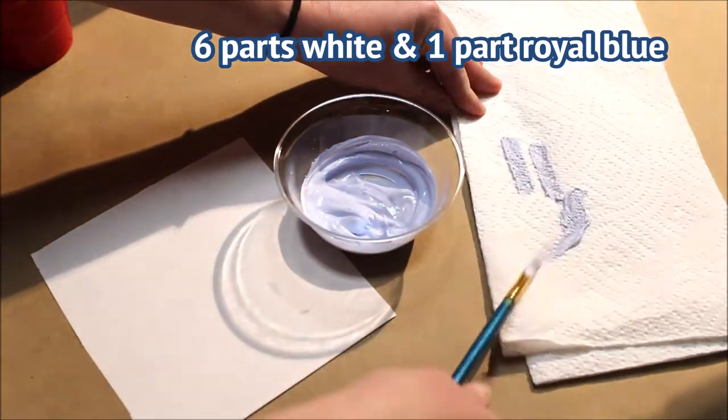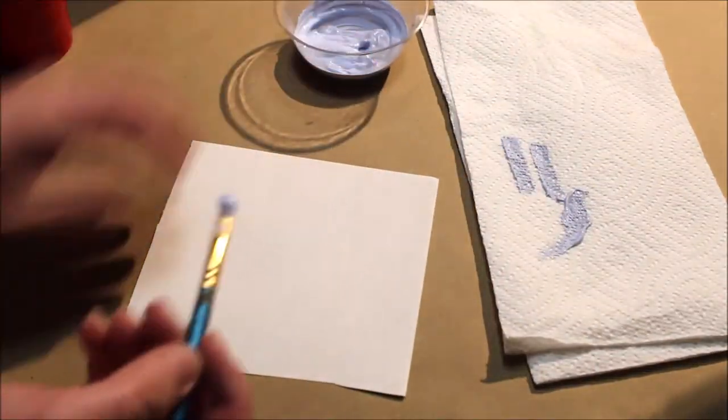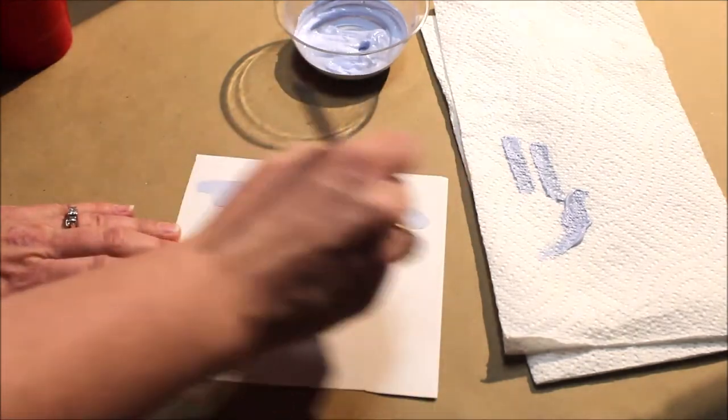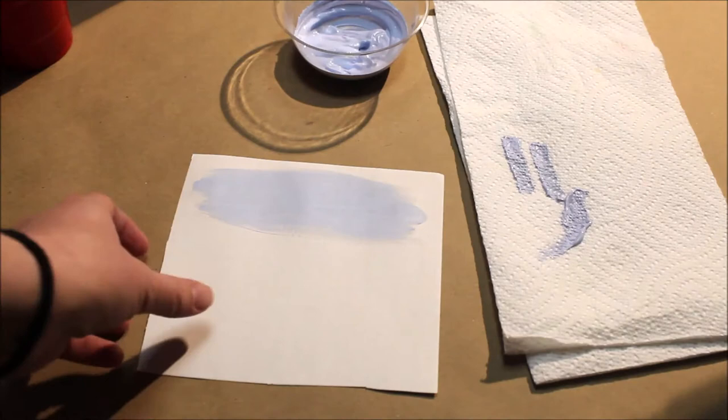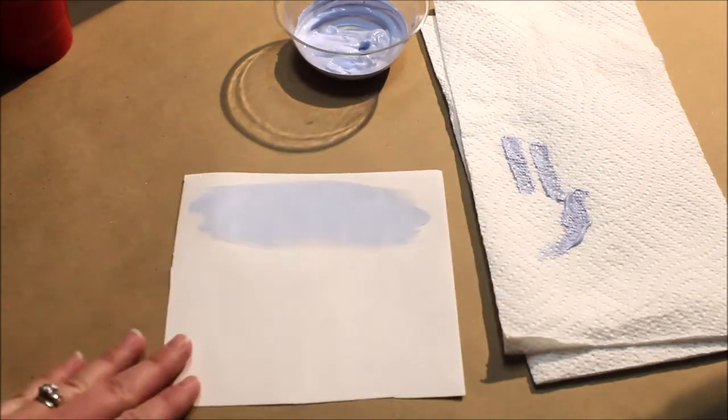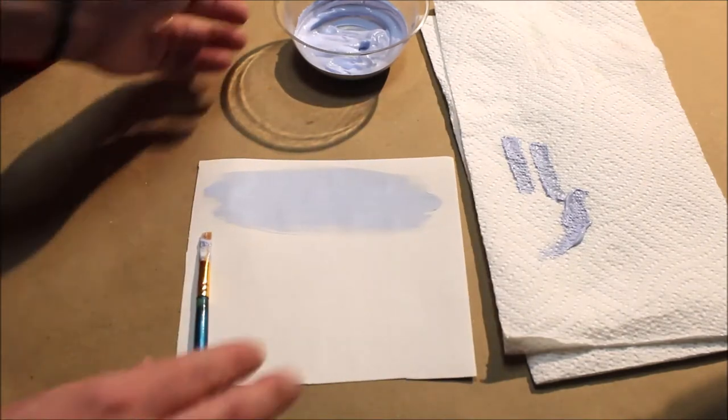So that was pretty simple. We just mixed it up in a little container from the dollar store with a paintbrush, and I just want to paint it out a little bit right here so I can see what color I have. Check it out under the light. Looks good to me. So that's how you make sky blue.